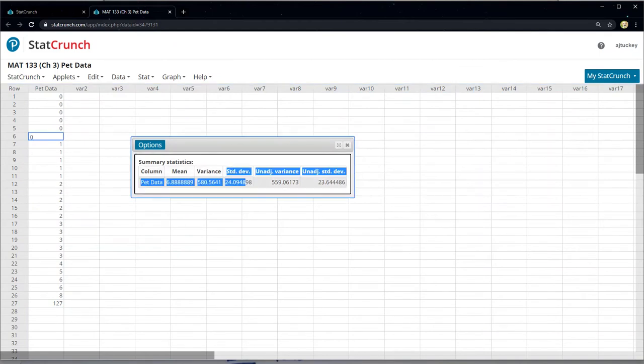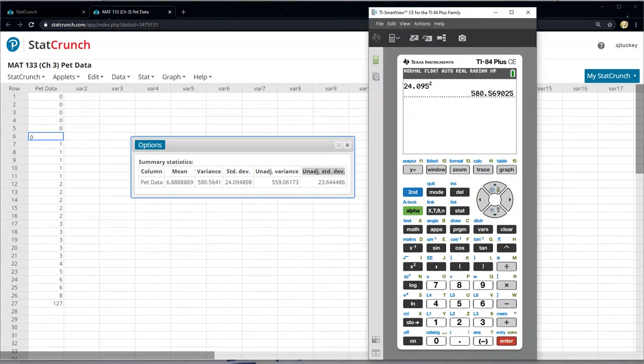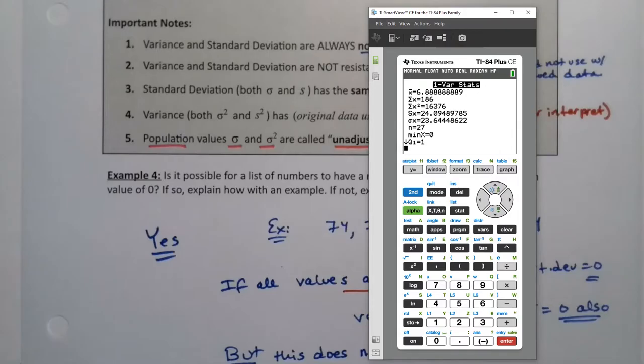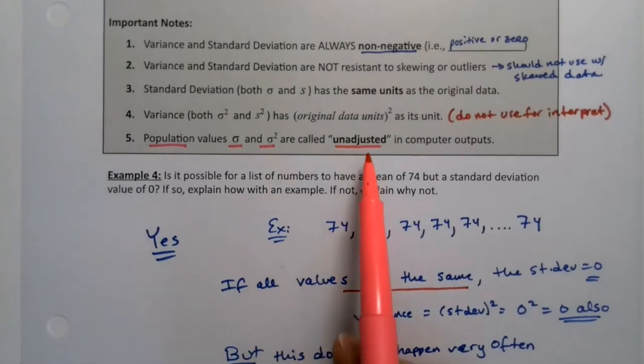So if it's a sample, you use the regular standard deviation. But if it's a population, you use the unadjusted standard deviation. On the calculator, it just shows up as sigma. So if I grab on the calculator, it'll say little sigma on it, right? See, 23.644. See, and over here in StatCrunch, it's called unadjusted. But they're the same thing, right? They're the population values. So that was just a reminder of that.